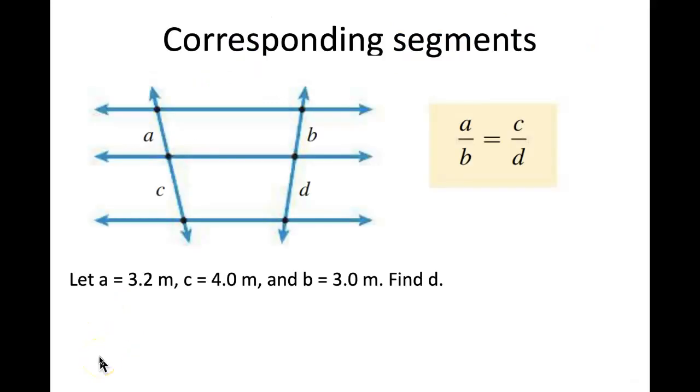And then the last part of this particular lesson deals with corresponding segments. Now here again, these are corresponding segments involving parallel lines and transversals. So if you'll notice in the diagram, over here on the right-hand side, they've got A is to B as C is to D. You could have written A is to C as B is to D. That would be correct too. But they give you a problem here to work out, so we're going to take a moment and fill this in.